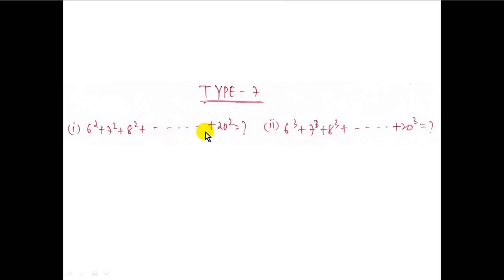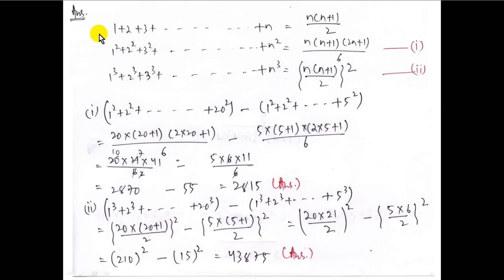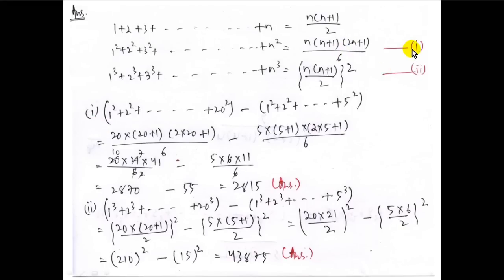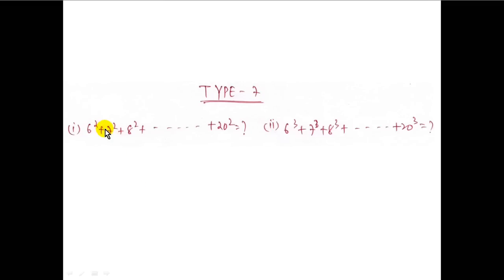Type 7: when a finite number of consecutive squares or cubes are given. We already know: the sum of n numbers is n(n+1)/2; the sum of squares is n(n+1)(2n+1)/6; and the sum of cubes is [n(n+1)/2] squared. The first case uses the squares formula, and the second case uses the cubes formula.